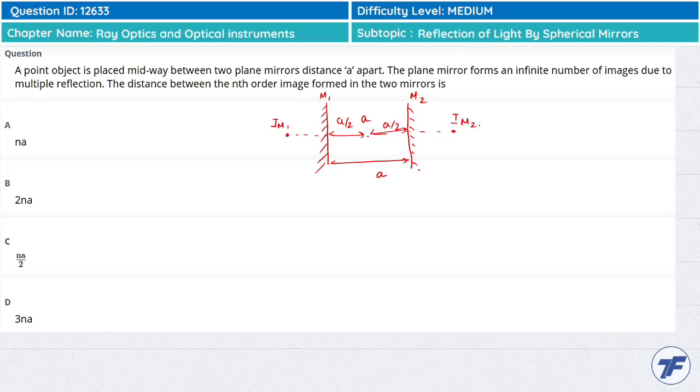This will be a/2 and this will also be a/2. So if you see, the two images will be at distance a/2 plus a/2 plus a, which equals 2a. The first image distance will be 2a.